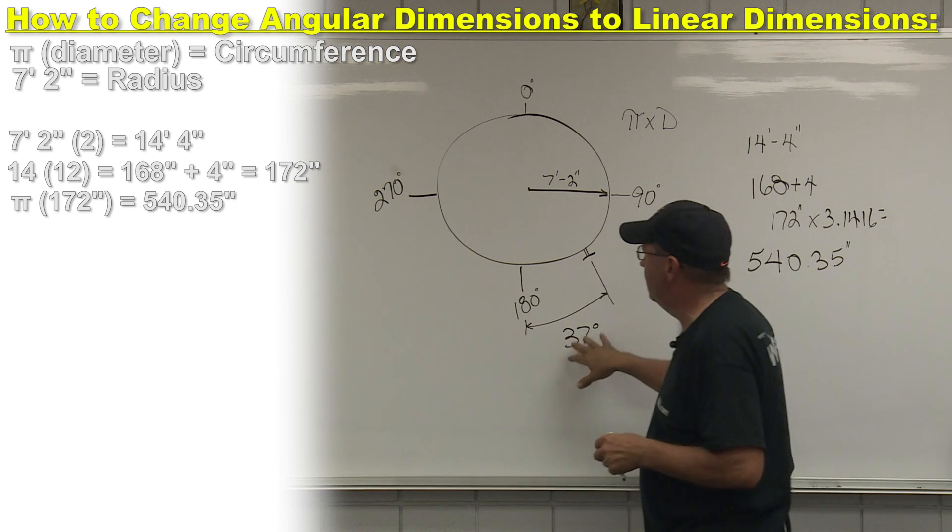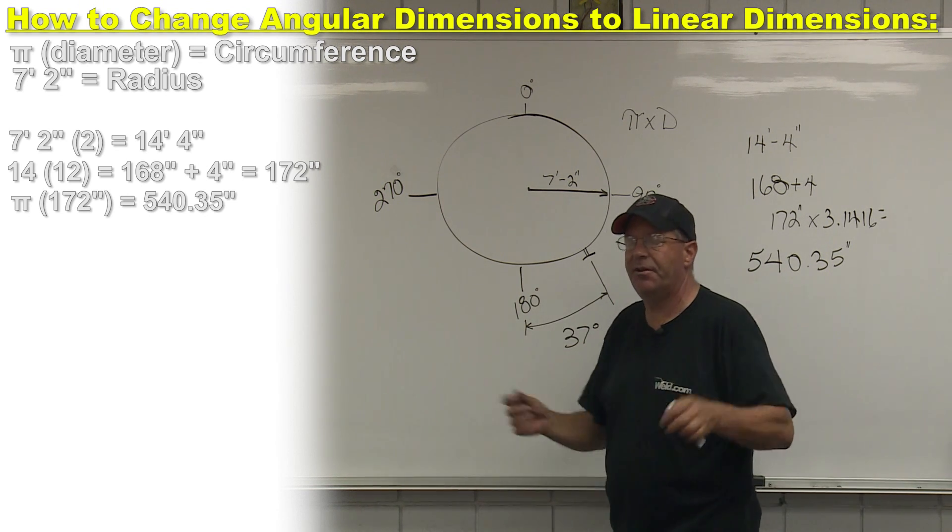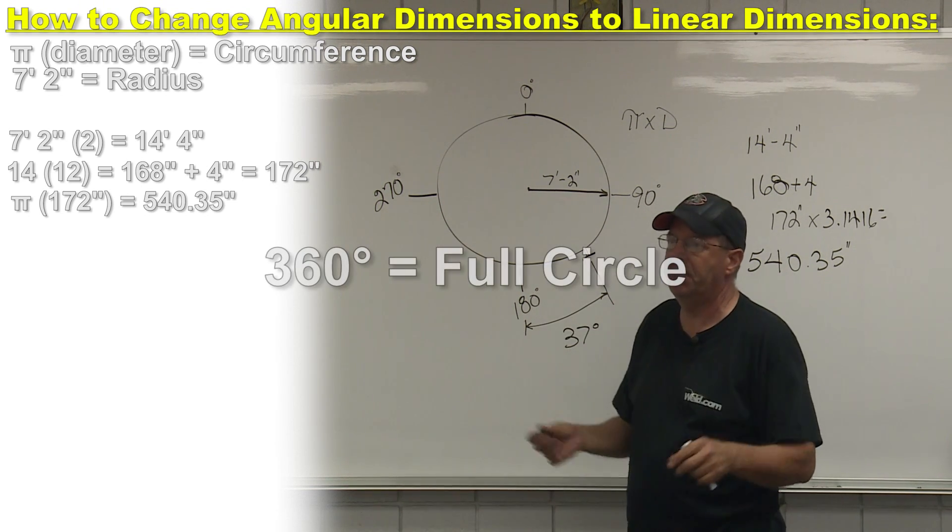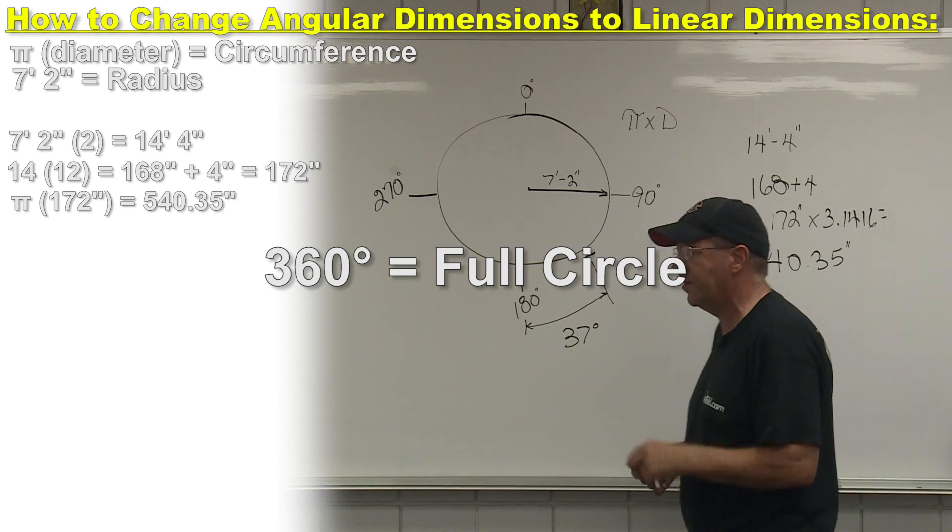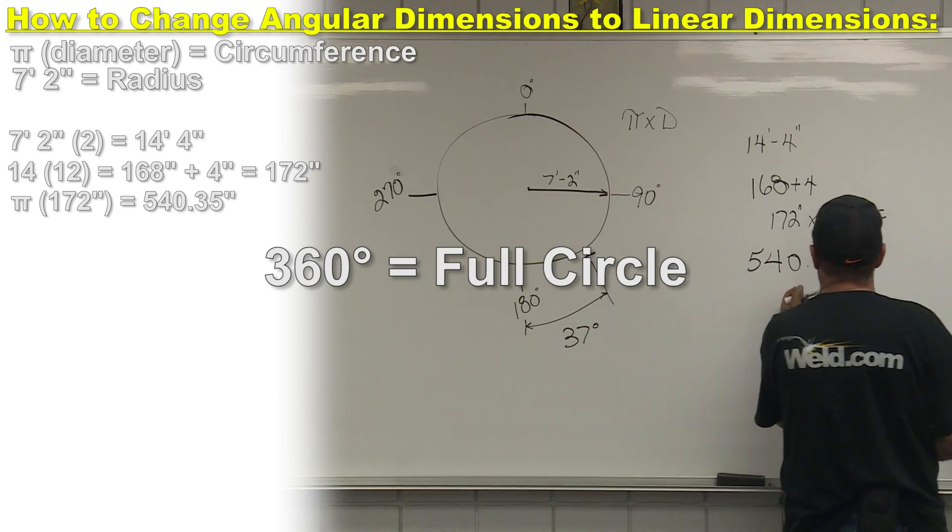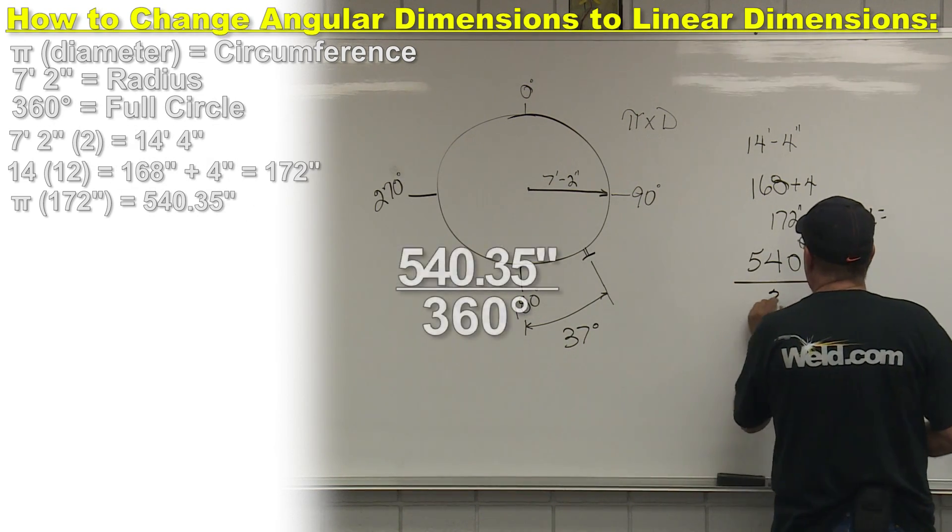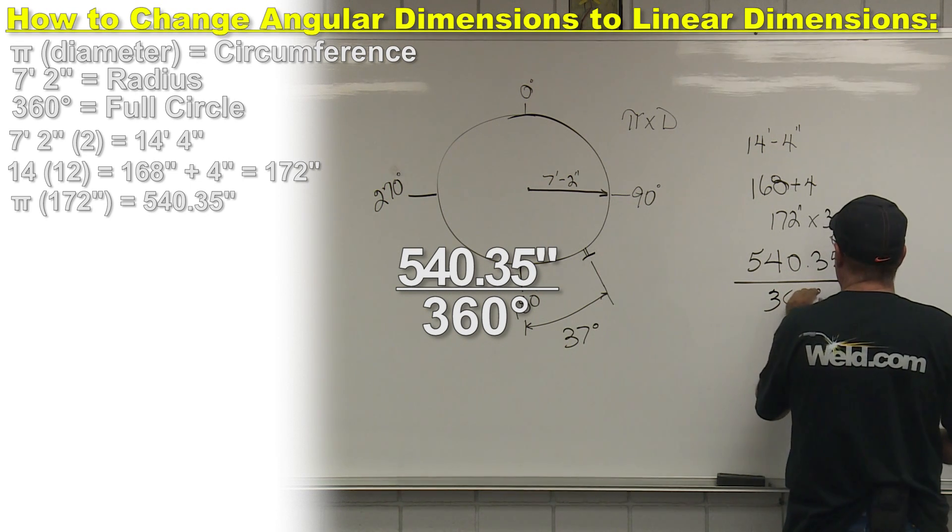Well, remember I said we were trying to do something with degrees. How many degrees are there in a circle? We all know that there's 360. For those of you that didn't, you just learned something today. How about that?